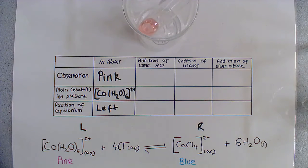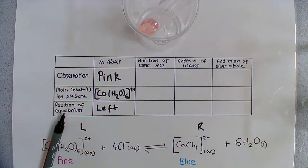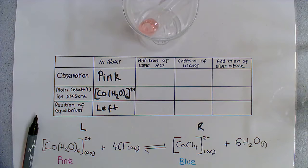We're now going to have a look at what happens when we add concentrated hydrochloric acid. The reason I need concentrated hydrochloric acid is because I don't want there to be any water present. So I'm going to add it in and we're going to observe what happens to the colour.